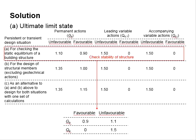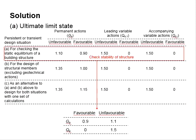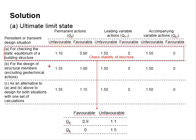To solve this, first determine gamma by referring to the table for the ultimate limit state. Since we are checking stability in terms of overturning, we refer to that specific row, which includes permanent actions (GK), leading variable actions (QK), and accompanying variable actions under favorable and unfavorable conditions. From the table, the favorable and unfavorable factors of safety for GK and QK are obtained.